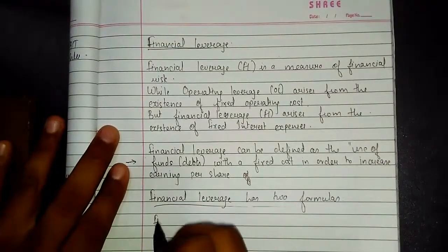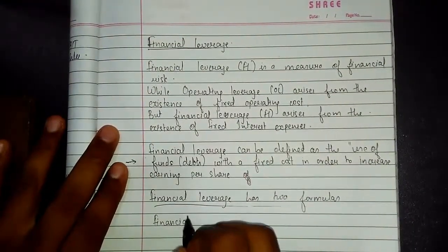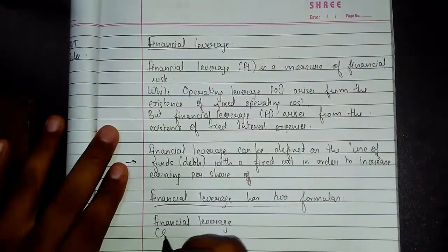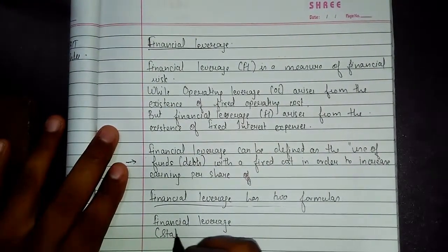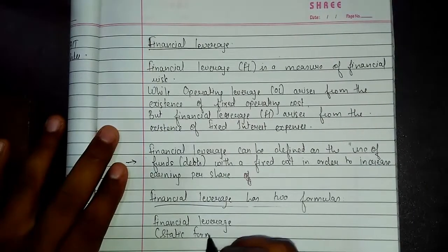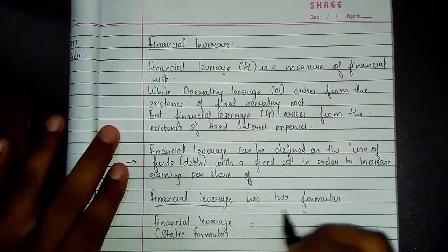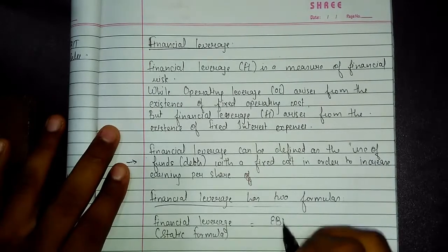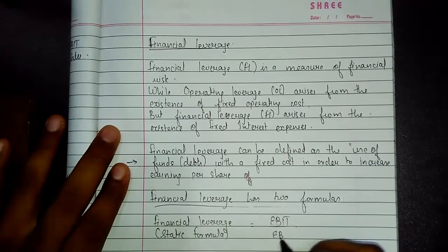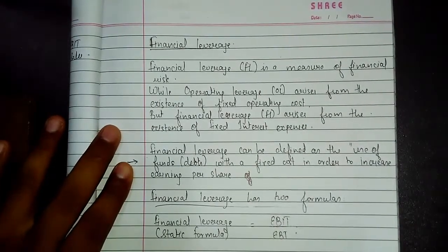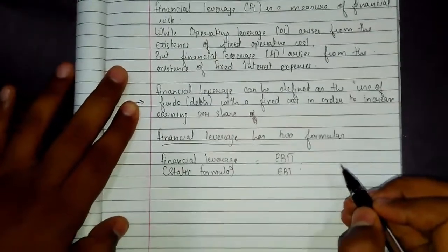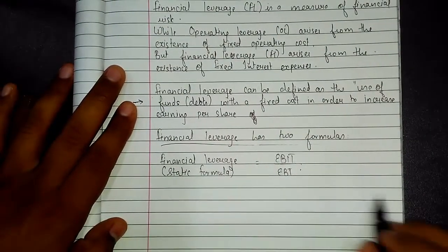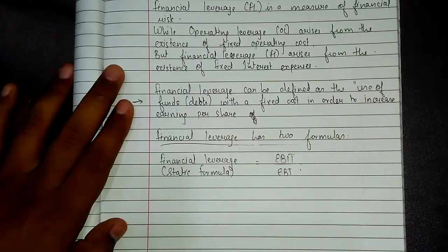The financial leverage static formula is: Financial Leverage = EBIT divided by EBT. EBIT refers to Earnings Before Interest and Tax; EBT refers to Earnings Before Tax.